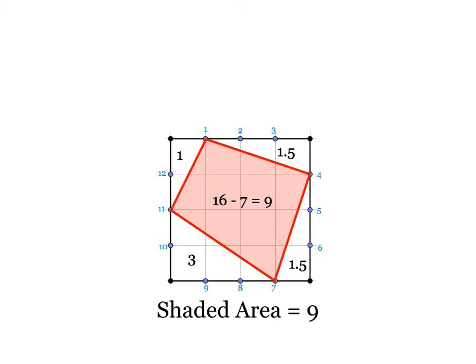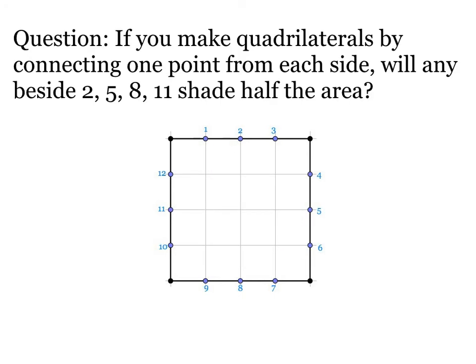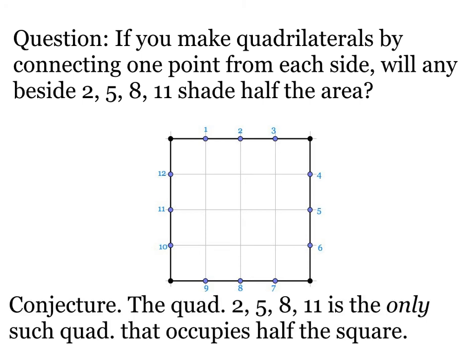This brings up a question for me right away, which is: will any of the quadrilaterals we make in this way by connecting one point from the top, one point from each side, one point from the bottom to create a quadrilateral, will any of these ever shade in half the area aside from that one we've already done, two five eight eleven? And you can talk about what you think, but I would like to make a conjecture on this right away, which is that that one we started with, two five eight eleven, is special. That I think is going to be the only quadrilateral that we make in this way that will occupy half of the square, that has that area eight.